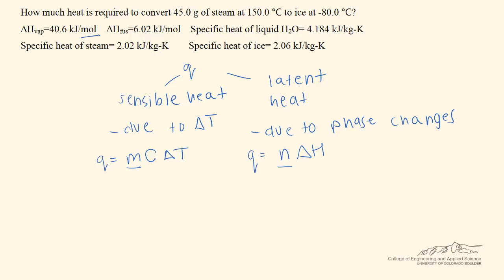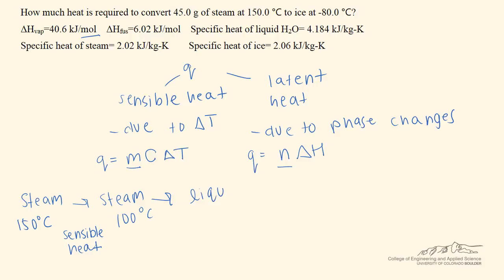It is helpful to write out a chart describing the different transitions happening in the system. We start with steam at 150 degrees Celsius. As we cool, we get steam at 100 degrees Celsius — this is accompanied by sensible heat. Then, as we continue to cool from steam at 100 degrees Celsius, we form liquid at 100 degrees Celsius, which uses the latent heat formula.